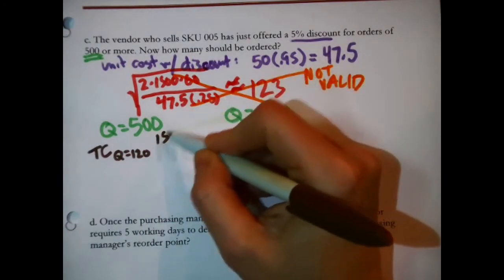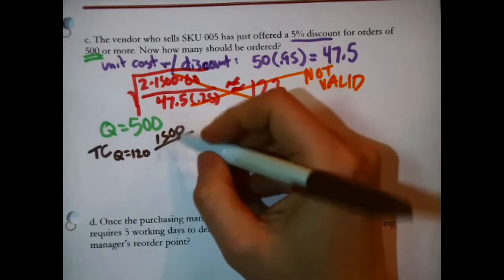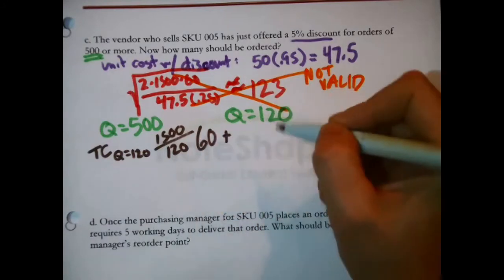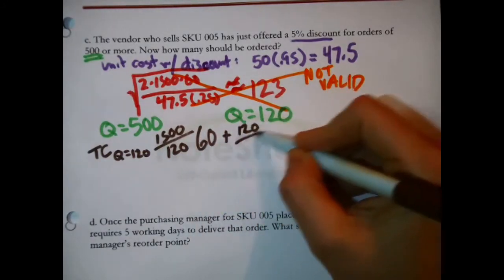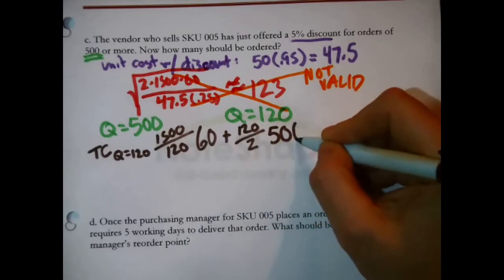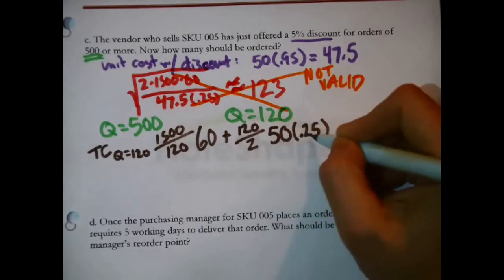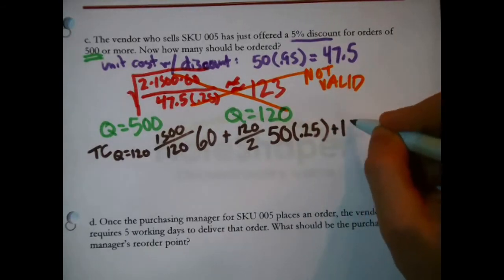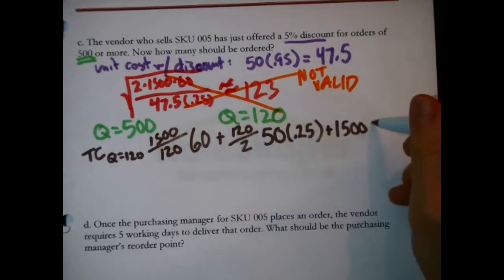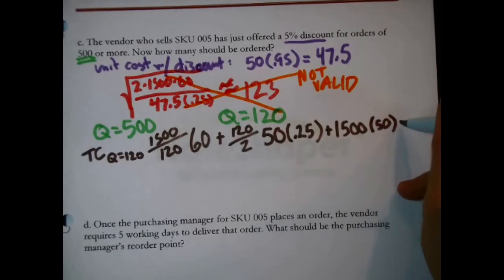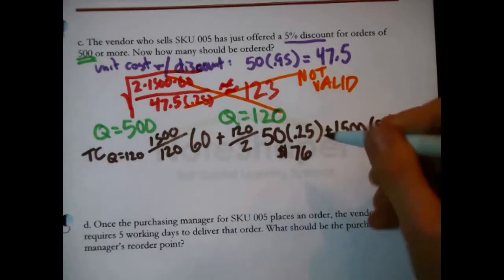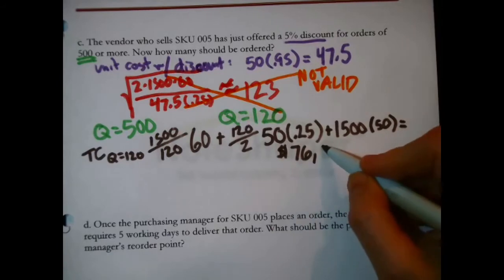That's just the 1500 D divided by Q. Q is 120, times 60, plus the Q we're testing is 120 divided by 2, Q divided by 2, times H. H being 50, 25% of 50, 50 times 0.25. Plus, and only now, by the way, we are going to buy 1500 of them, and if we buy them 120 at a time, we are going to pay $50 each. We know that. What is the total combined cost of all of this? It's a pretty steep bill. 76,500 is what I'm getting.